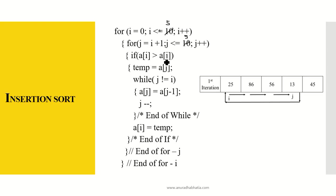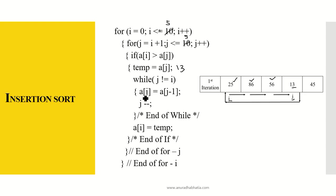If a[i] is greater than a[j]: for 25 and 86 nothing will happen; for 25 and 56 again nothing happens; but when we reach 25 and 13, this condition is true. So we set temp equal to a[j] — the number 13 moves into temp. Then, while j is not equal to i (comparing index values), we set a[j] equal to a[j minus one], so 56 moves to the location of 13. Then j minus minus, so j moves back one position.